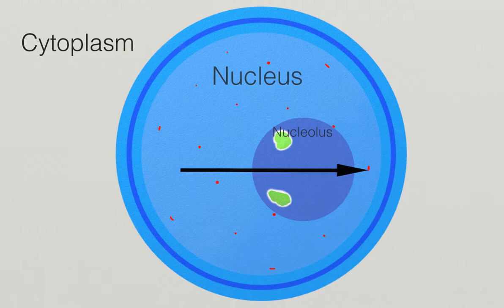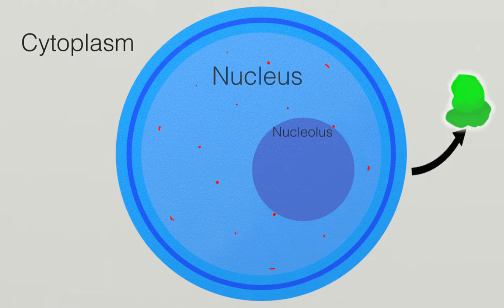Export out of the nucleus is just as critical because mRNA transcribed in the nucleoplasm, as well as ribosomal subunits made in the nucleolus, need to be taken to the cytoplasm where they are assembled for protein synthesis.